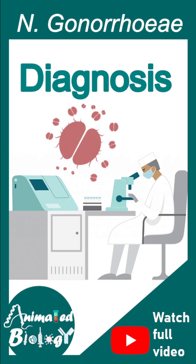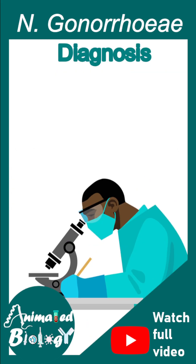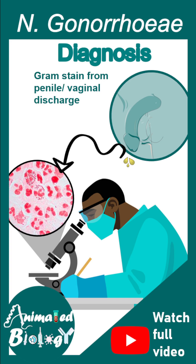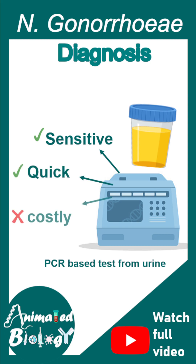When it comes to diagnosis, there are clinical symptoms, but in terms of pathology one can look at bacterial presence using gram staining — it would show gram-negative — though this is not really efficient. From a urine sample, a PCR test for the presence of N. gonorrhoeae would be more sensitive and quick, but a little bit more expensive.